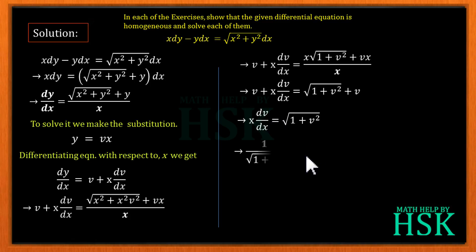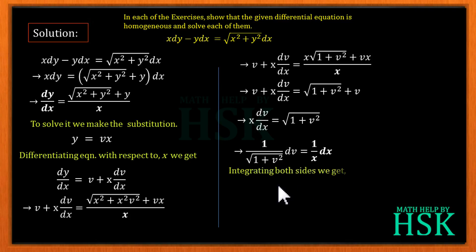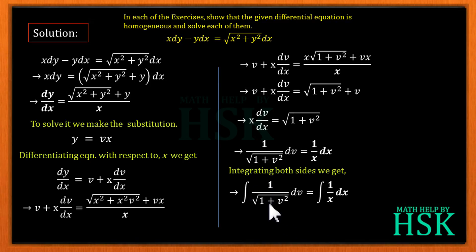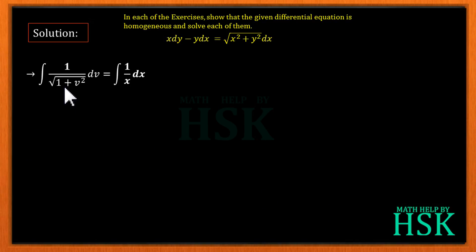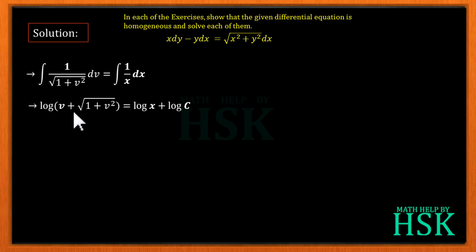Separating variables: 1/√(1 + v²) dv = (1/x) dx. Integrating both sides, the integration of 1/√(1 + v²) with respect to v equals log|v + √(1 + v²)|, and integration of 1/x equals log x. We add log c as the constant of integration, so both sides are expressed in terms of log.